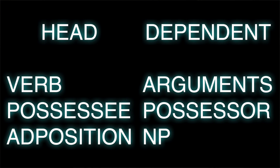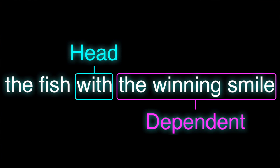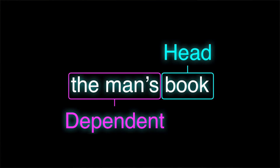In a verb phrase, the head is the verb, and then dependents are all of its arguments — subject, object, and indirect object. In an adpositional phrase, the adposition is the head, and the nominal or noun phrase is its dependent. So in 'on the house,' the house would be the dependent and 'on' would be the head. For a possessive phrase, the possessed noun is the head and the possessor is the dependent. Because if you're talking about the man's book, you're talking about the book, not the man — so the book is the head. It's the thing in charge, the thing you're talking about.